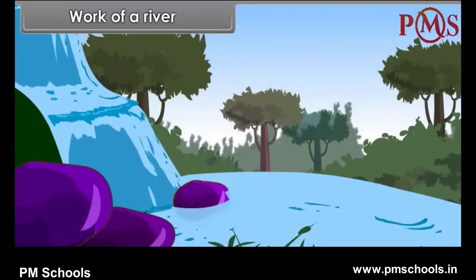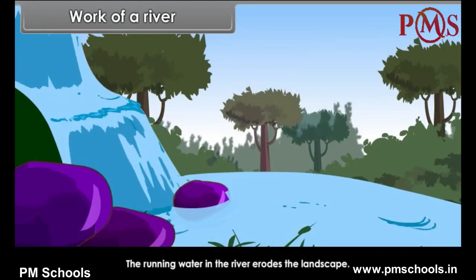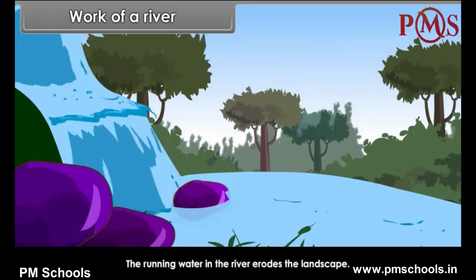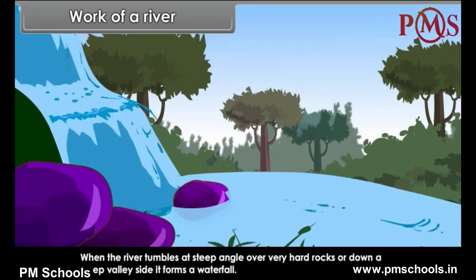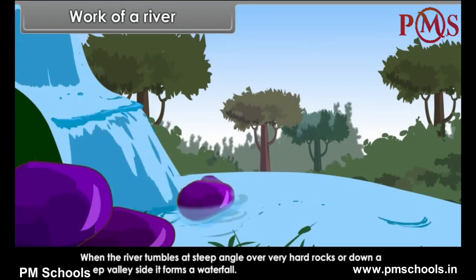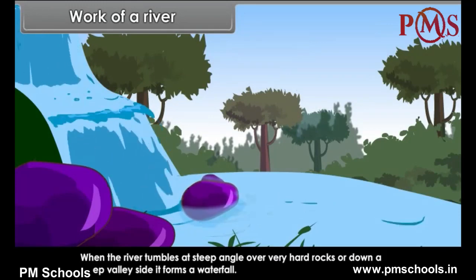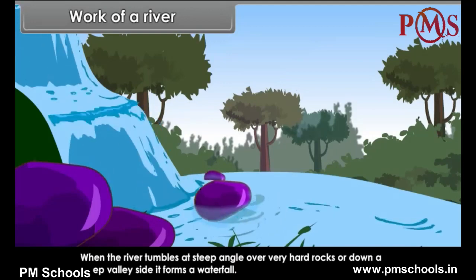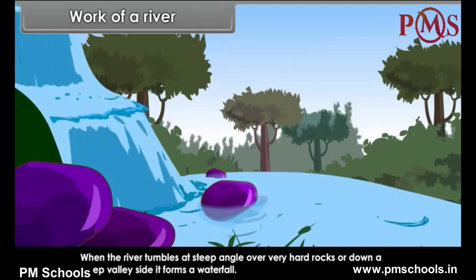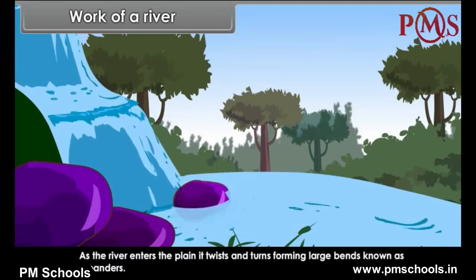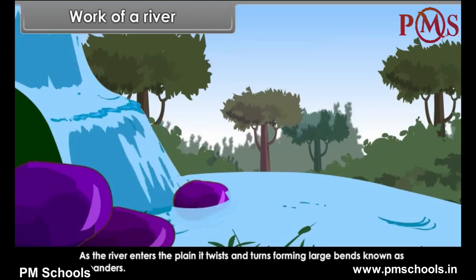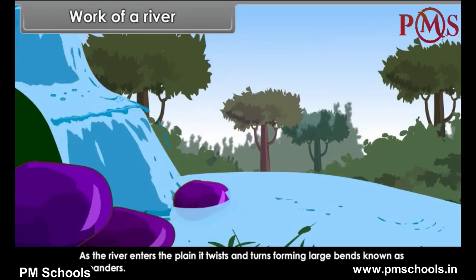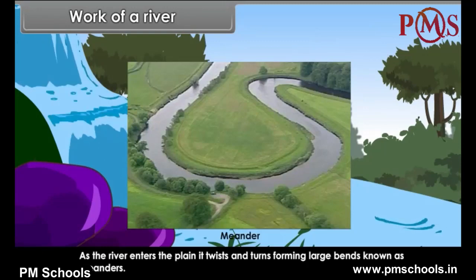Work of a River. The running water in the river erodes the landscape. When the river tumbles at a steep angle over very hard rocks or down a steep valley side, it forms a waterfall. As the river enters the plain, it twists and turns, forming large bends known as meanders.